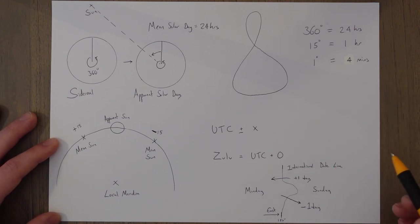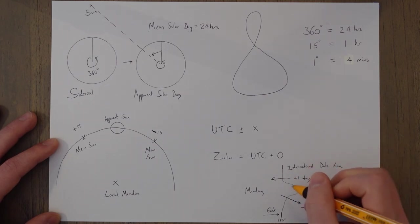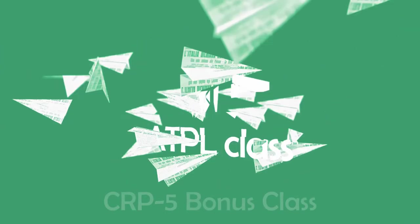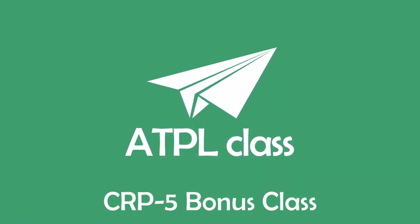And the last thing would be the international dateline, which is roughly around with the 180 meridian. It's got a few kinks in it where people are living in UTC plus 13 plus 14. And if we cross over it to the east we reduce by one day, and we cross over to the west we increase by one day.